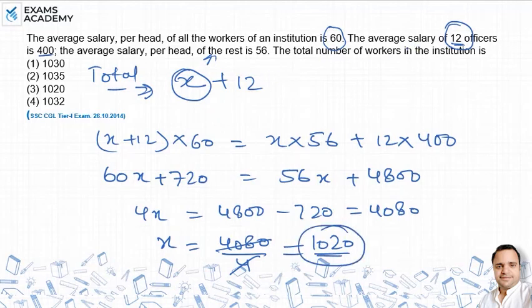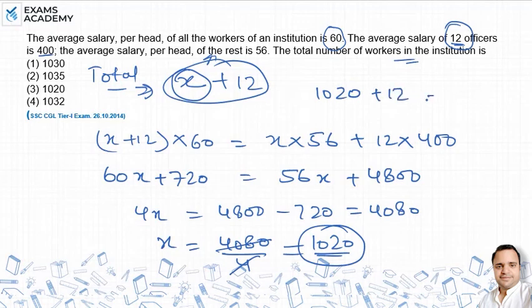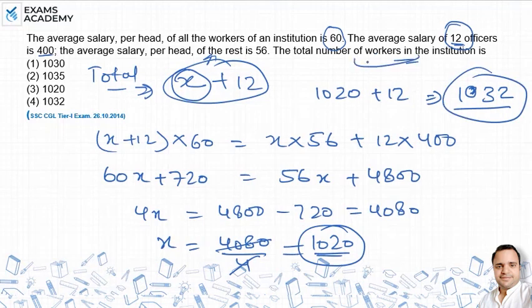So X equals 1020. The total number of workers is 1020 plus 12, which equals 1032. The answer is option 4.